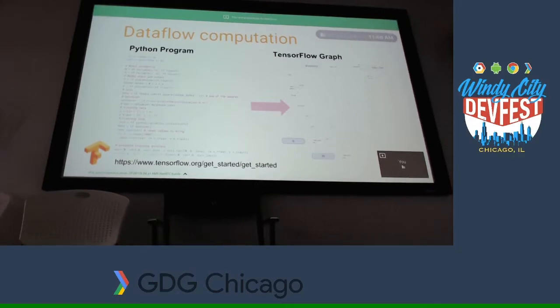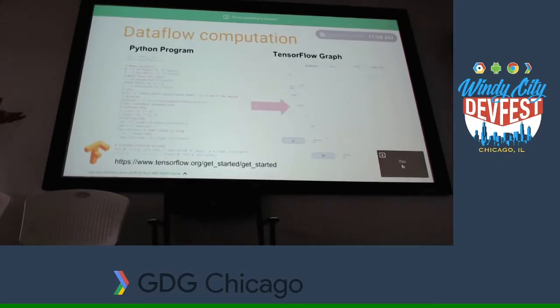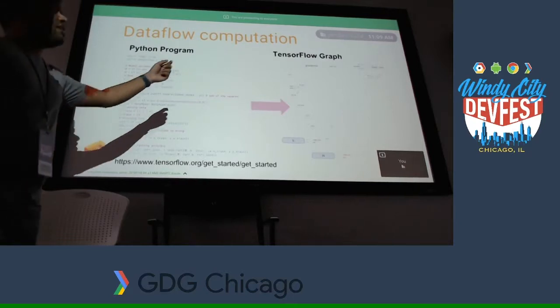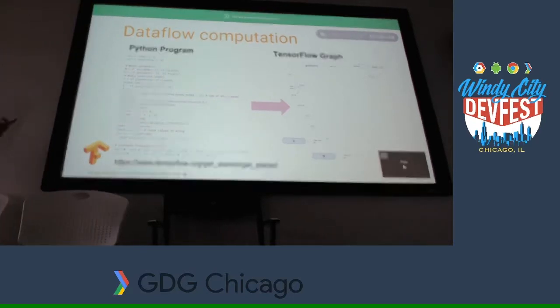How does it work? You've got your components to write your code. You have a normal Python program. When you execute it, it generates a TensorFlow graph. Very simple.